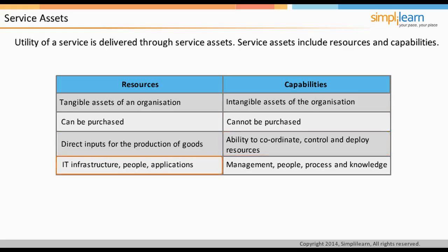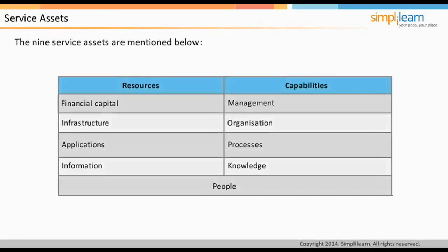Resources include IT infrastructure, people, and applications. Capabilities are driven by experience, based on information, knowledge-intensive, and nested within an organization's management, people, and processes. The nine types of assets are shown on the screen.